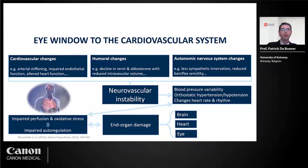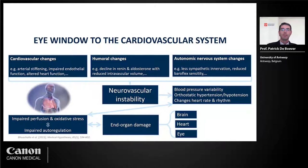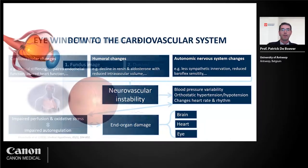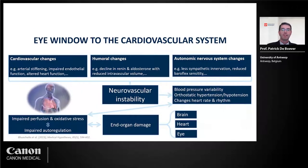On the top you see some physiological changes that can occur during life and with aging. We all know about cardiovascular changes like arterial stiffening, impaired endothelial function, and altered heart function. At the same time, we see hormonal changes like changes in renin and aldosterone that regulate kidney and water balance and have an influence on intravascular volume. Thirdly, we also see changes in the autonomic nervous system and baroreflex sensitivity.